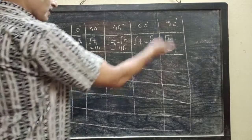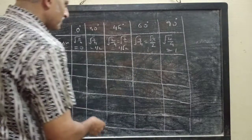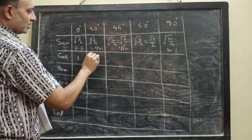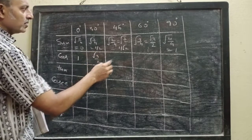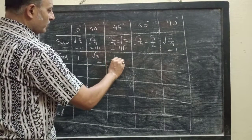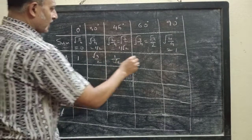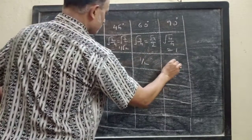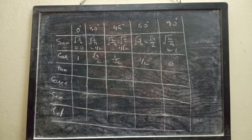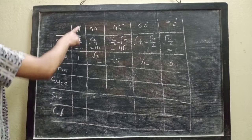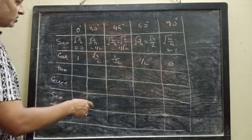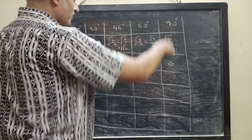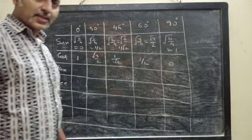For cosine, write the sequence in reverse order. First write 1, then root 3 by 2, then 1 by root 2, then half, then 0. So we get: cos 0° = 1, cos 30° = √3/2, cos 45° = 1/√2, cos 60° = 1/2, and cos 90° = 0.